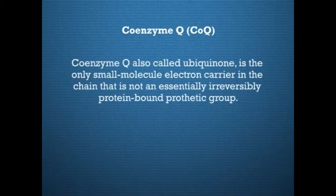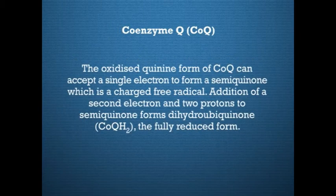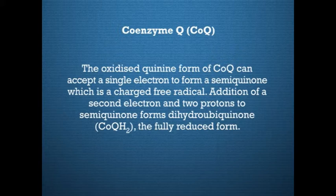Coenzyme Q, also called ubiquinone, is the only small molecule electron carrier in the chain that is not an essentially irreversible protein-bound prosthetic group. It is a carrier of both protons and electrons. The oxidized quinone form of ubiquinone can accept a single electron to form a semiquinone, which is a charged free radical. Addition of a second electron and two protons to semiquinone forms dihydroubiquinone, denoted by CoQH2, the fully reduced form. Both ubiquinone and dihydroubiquinone are soluble in phospholipids and diffuse freely in the hydrophobic centre of the inner mitochondrial membrane, carrying electrons and protons between the protein complexes of the chain.